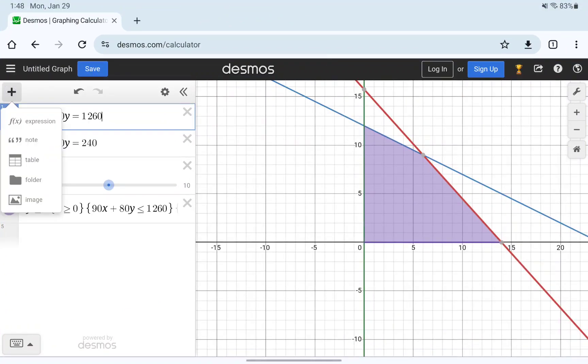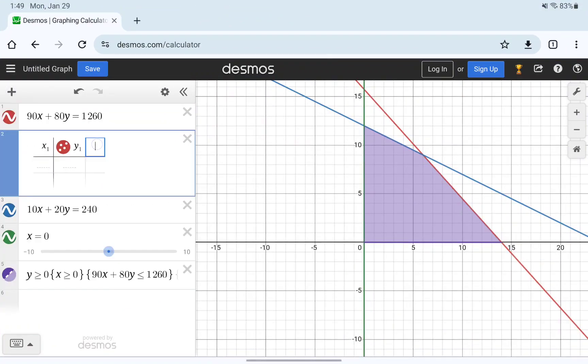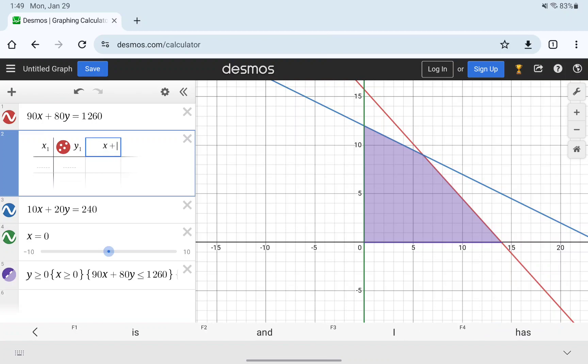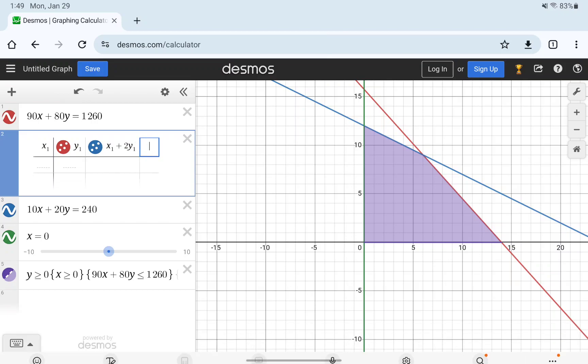So we can go back to Desmos and insert a table where that third column will be the objective function that we want to optimize. We need to make sure we use those with the subscript, so this needs to be x1 plus 2y1, so that we're referencing those values in the first two columns.